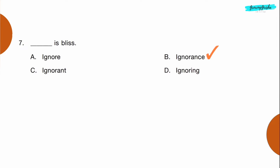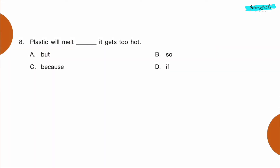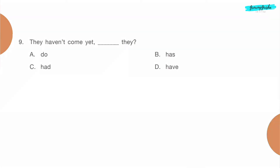Question 7: Dash is bliss. Option B: ignorance. Question 8: Plastic will melt dash it gets too hot. Option D: if.